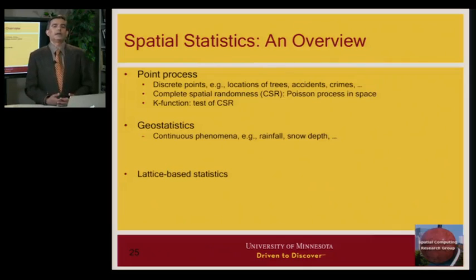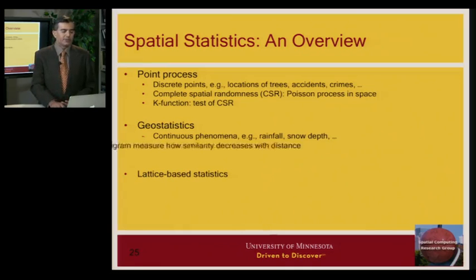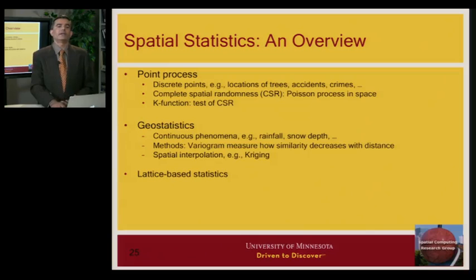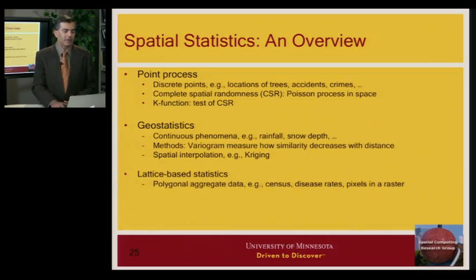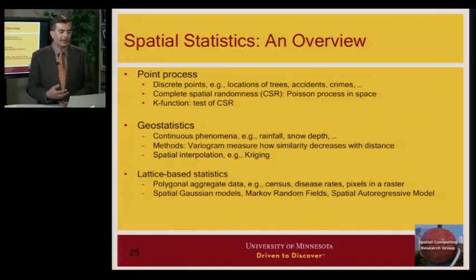There are other theories we won't go into in depth. For continuous phenomena like rainfall, snow depth, or mining, there are theories from geostatistics with methods like variogram and Kriging, used for interpolation and studying spatial interaction distances. And for census-type data aggregated over polygons due to privacy or other reasons, there is yet another set of theories from lattice-based statistics.